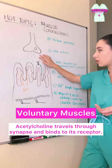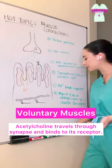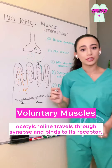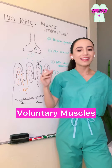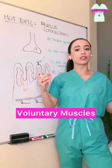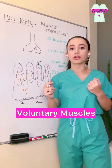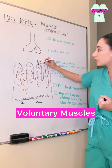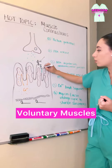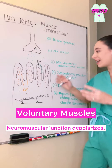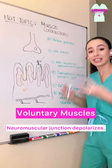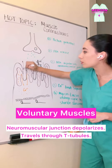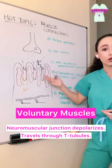This acetylcholine is going to travel through the synapse and bind to an acetylcholine receptor at the neuromuscular junction. This is when the muscle receives its first message that it's time to contract. This acetylcholine on its receptor is going to cause the neuromuscular junction to depolarize, and that activity is going to travel down the t-tubules in the neuromuscular junction.